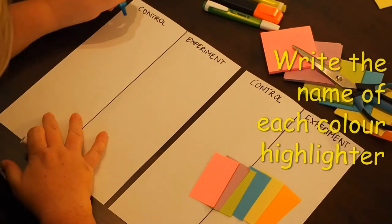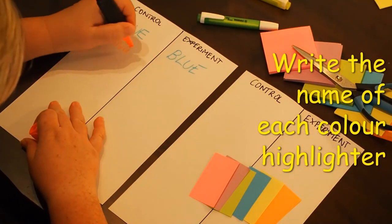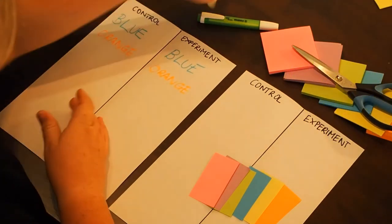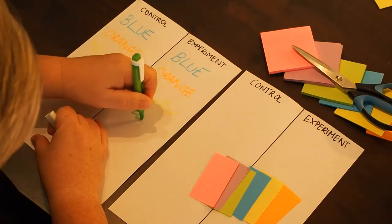If you choose to use highlighters, in big thick letters write the name of the color on both the control and experiment sides of the page. Take your time with your writing. We've sped it up a little so you don't just have to watch this video all day.